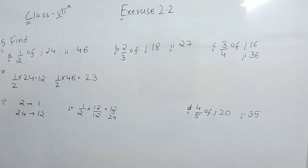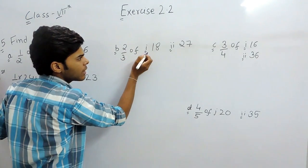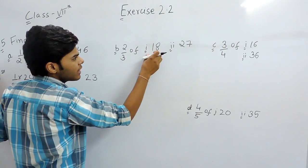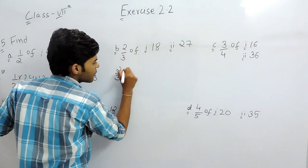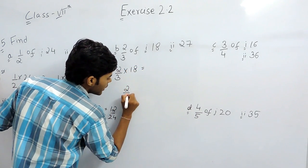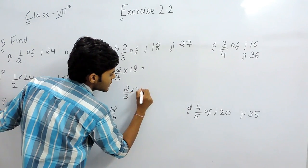But the simplest is the first method. That will be, of means multiplication. We will multiply 2 upon 3 with 80 and then 2 upon 3 with 27. So 2 upon 3 will be multiplied with 18 and then 2 upon 3 will be multiplied with 27.